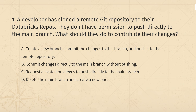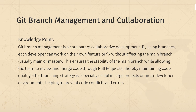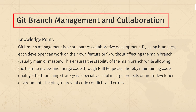Question 1. A developer has cloned a remote Git repository to their Databricks repos. They don't have permission to push directly to the main branch. What should they do to contribute their changes? This question tests Git branch management and collaboration.